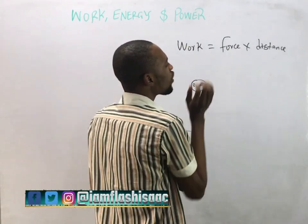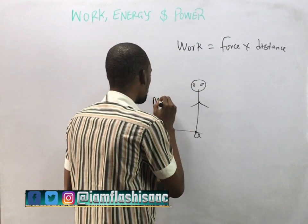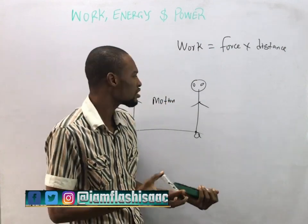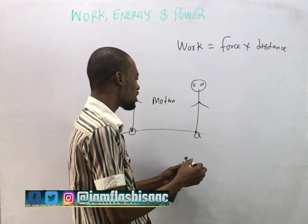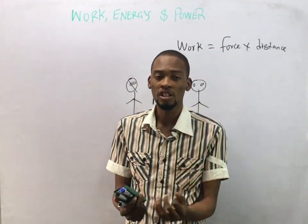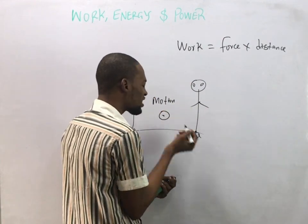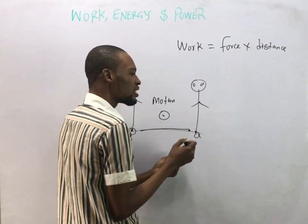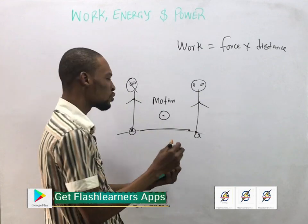Force is an agent that causes motion. Motion is a change in position of a body with time. Bodies change — we move from one point to another and we have different types of motion: rotational motion, which is the motion of a body about an axis; linear motion; and oscillatory motion, which is the to-and-fro motion of a body.